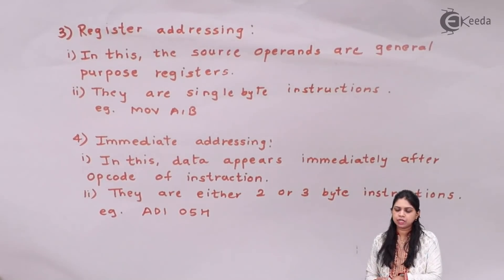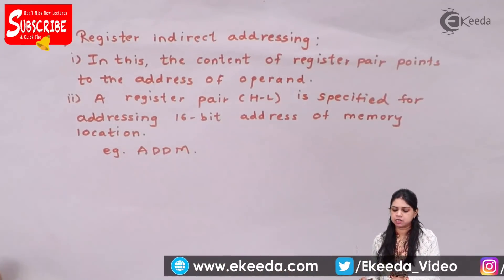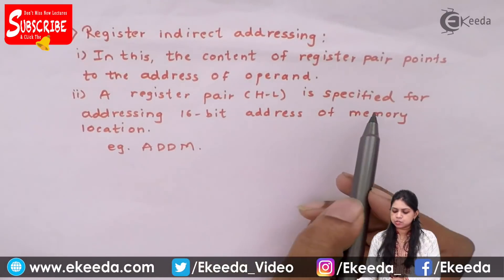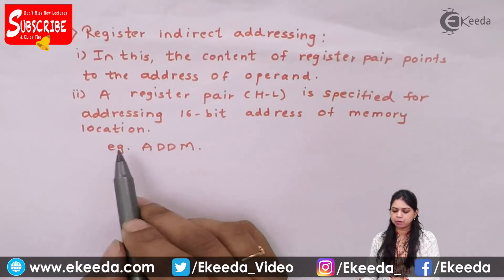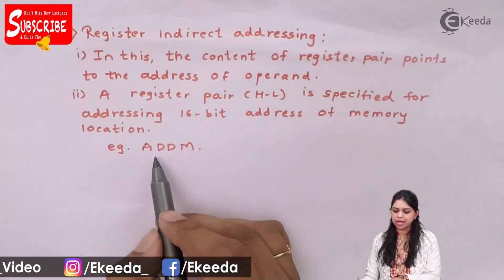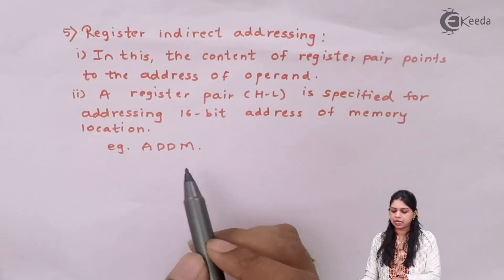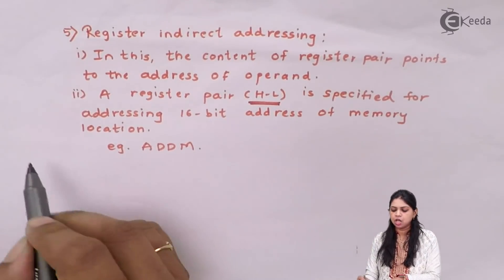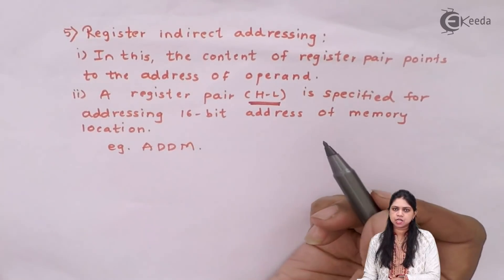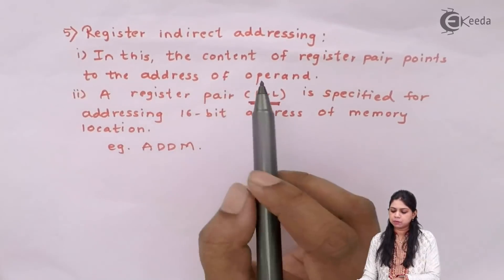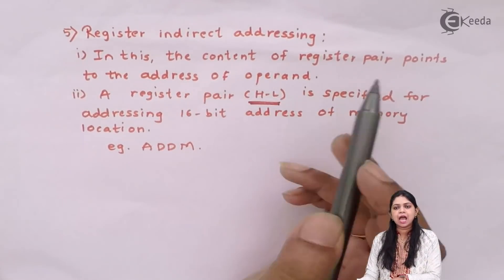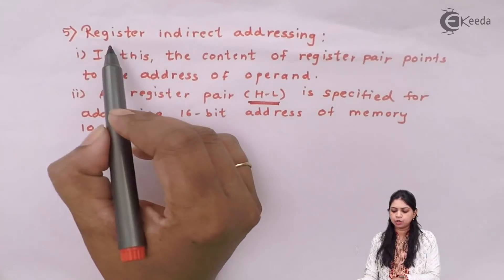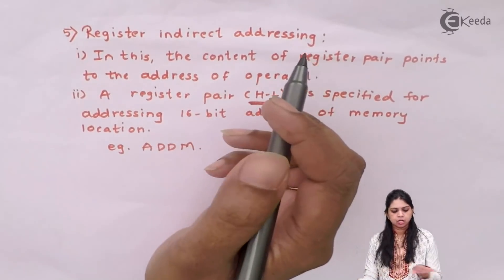Such instructions come under the category of immediate addressing mode; they can be either 2-byte or 3-byte instructions. Next we have register indirect addressing mode. In this mode, the content of a register pair points to the address of the operand. The register pair HL is specified for addressing a 16-bit address of a memory location. For example, ADD M — you are adding the memory content with the accumulator, and the memory is pointed to by the HL pair.